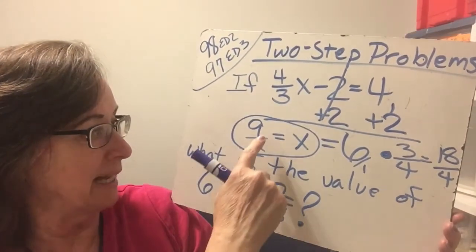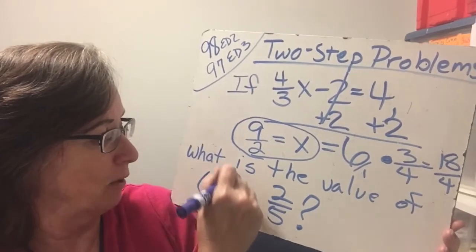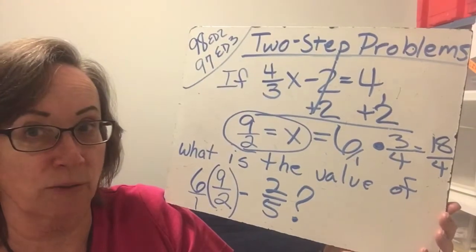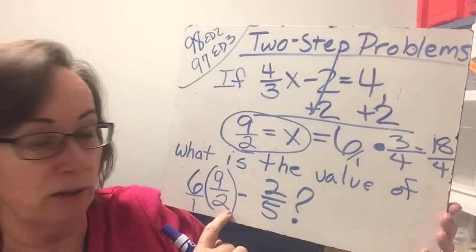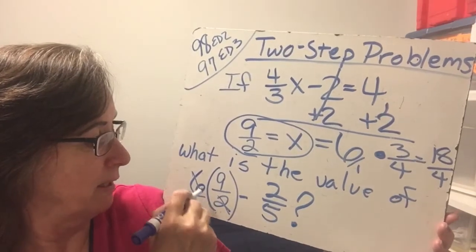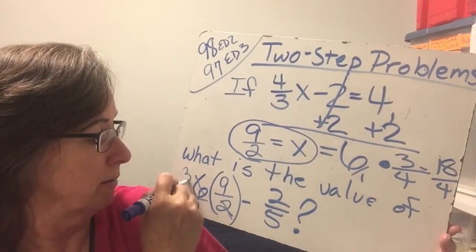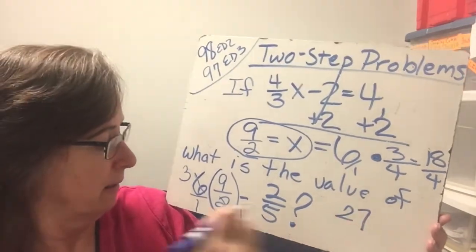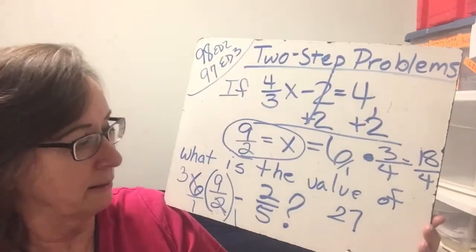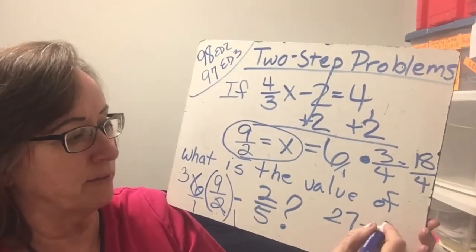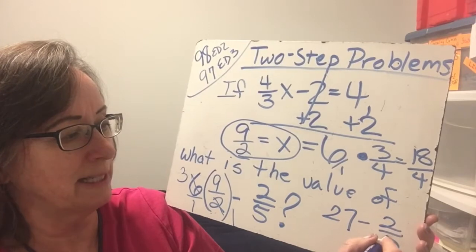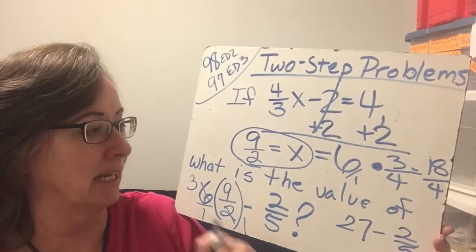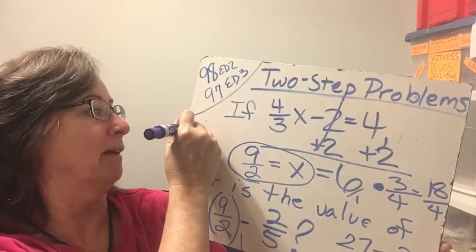And we have the information that we need to answer our question. So now we're going to take the 9 halves, we're going to put it right here where the x is. Now remember the 6 is a 6 over 1. So isn't the 6 and the 2 going to cancel? And that's going to be divide by 2 on both of those. 3, 1. 3 times 9 is 27 over 1 minus 2 fifths. What is 27 minus 2 fifths? Well, if we had this in this form, it would be a little clearer.